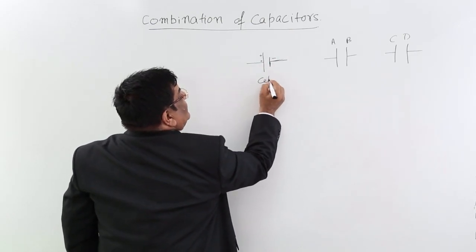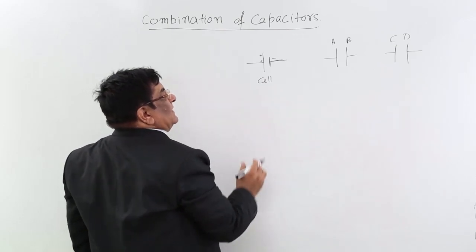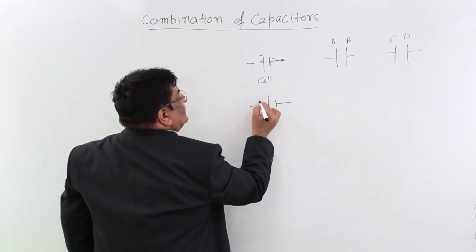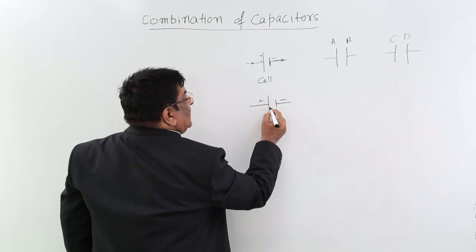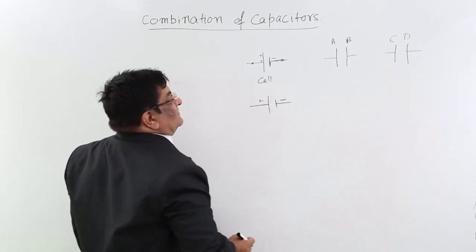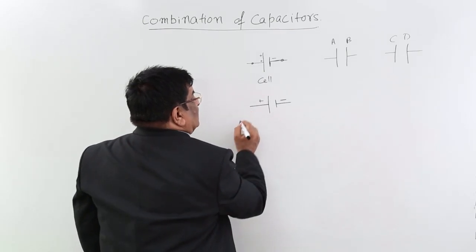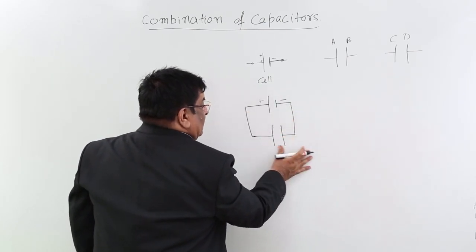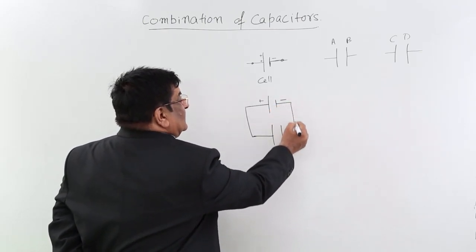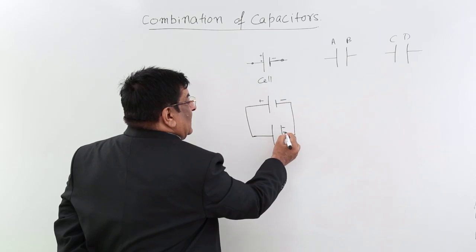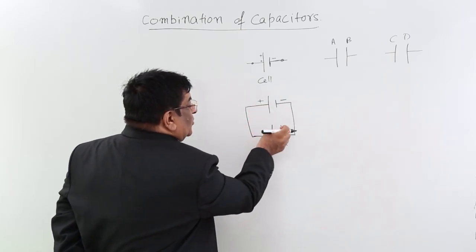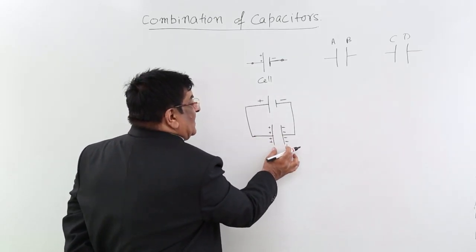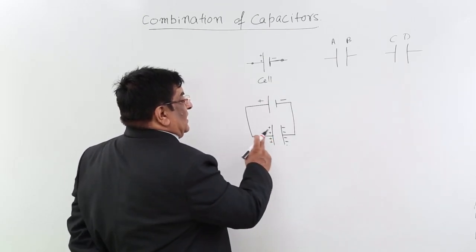We will call it a cell. A combination of cells makes a battery, and what we get are two terminals — a positive terminal and a negative terminal — with a potential difference between them. Whenever we connect a battery with a capacitor, one plate is connected with the positive terminal and one with the negative terminal. Electrons gather on one side; the positive terminal pulls electrons from the other plate, so that plate becomes positively charged. This capacitor is now charged.